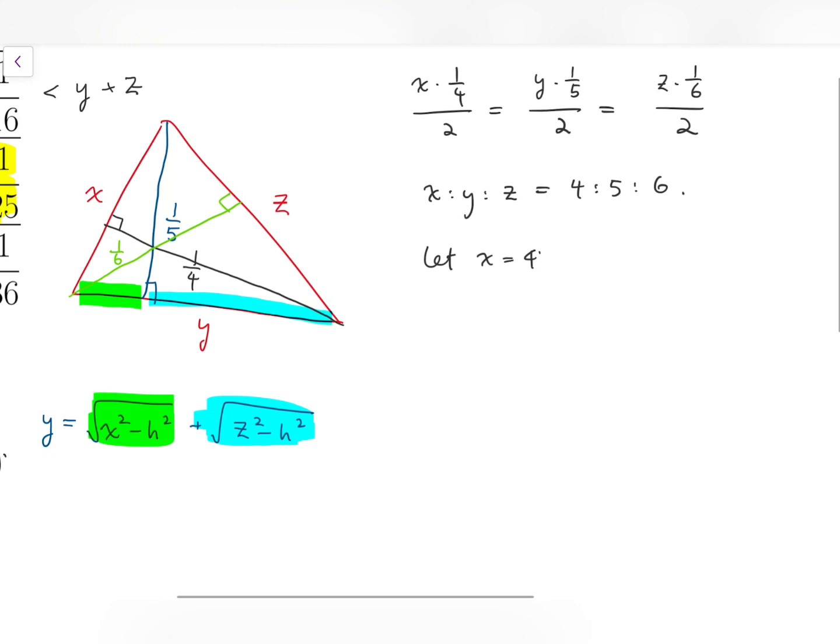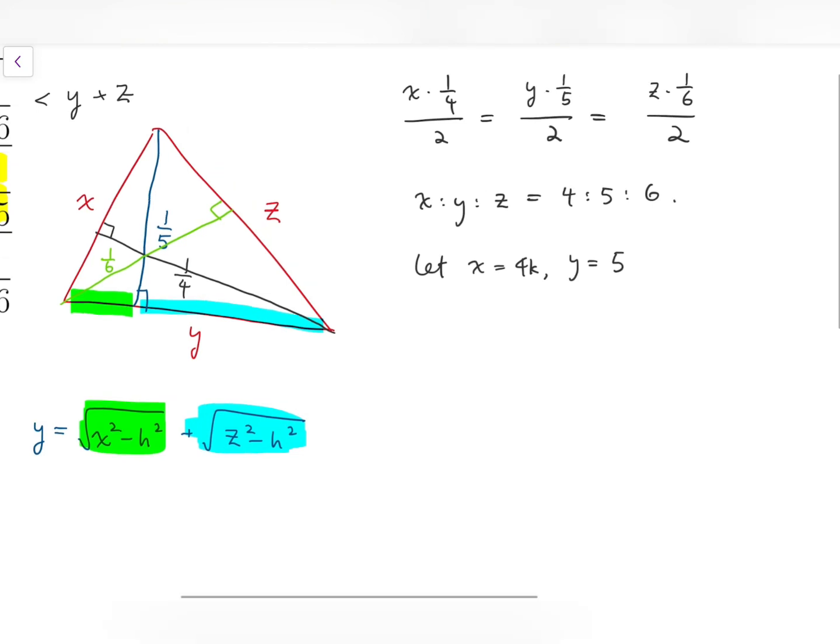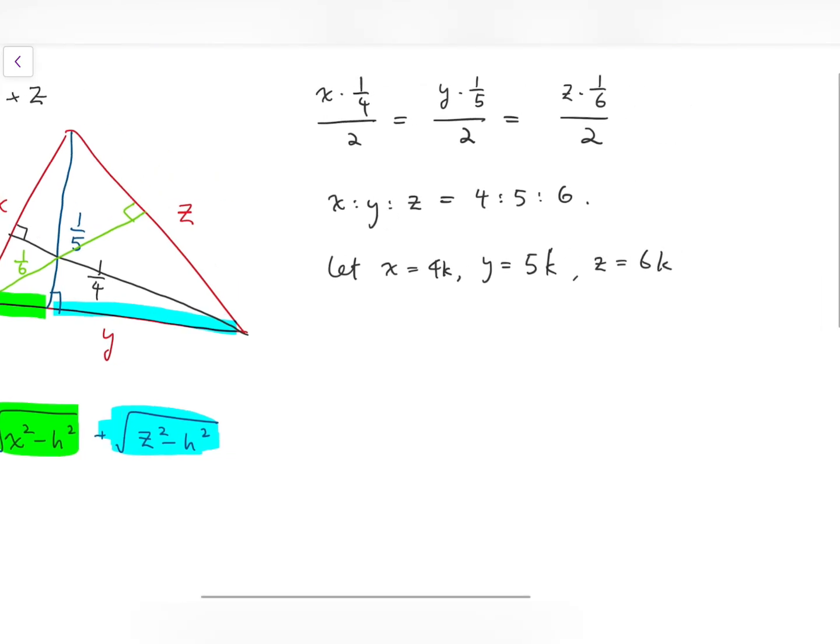So that I can let x equal to 4 times some constant, I call it k, with k to be a positive constant. Then from this, y has to be 5k, and z has to be 6k.